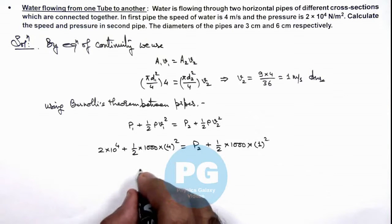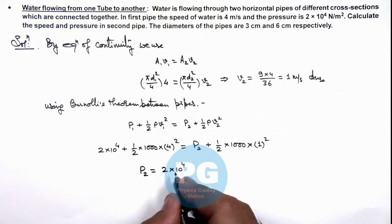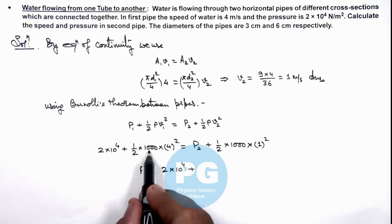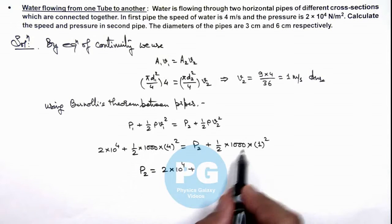Simplifying this gives us the value of pressure in the second pipe, which is 2×10⁴ plus this will be 1000 by 2, 500 multiplied by 16, minus 500.